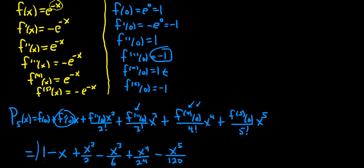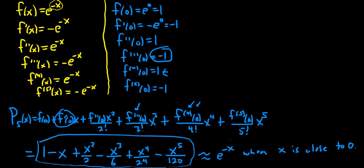And so this is the fifth Maclaurin polynomial for the function. This is approximately equal to e to the negative x when x is close to 0. That's what it is. That's what it's for. So it's a way to approximate functions with polynomials. Kind of a cool idea.